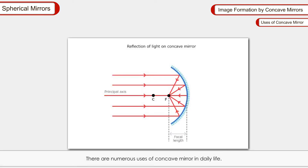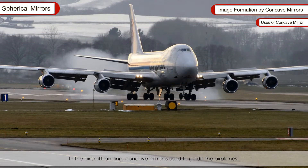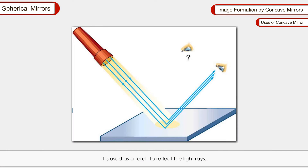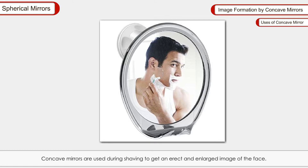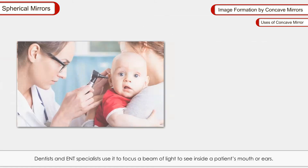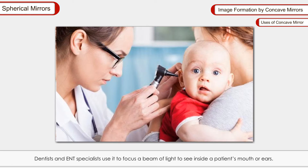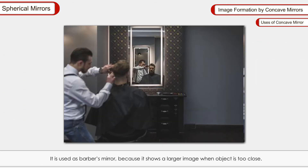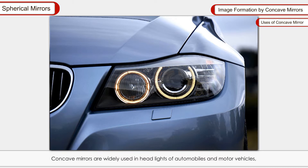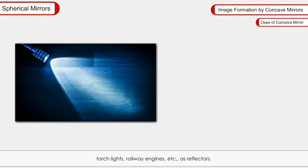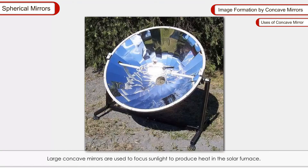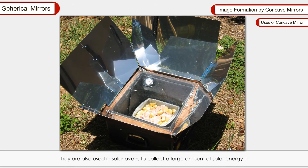Uses of concave mirrors: Concave mirrors are used in aircraft landing to guide airplanes, and as reflectors in torches. They are used during shaving to get an erect and enlarged image of the face. Dentists and ENT specialists use them to focus a beam of light inside a patient's mouth or ears. They are used as barber's mirrors and in headlights of automobiles, torch lights, and railway engines as reflectors. Large concave mirrors are used in solar furnaces and solar ovens to focus sunlight for heating, cooking, and melting metals.